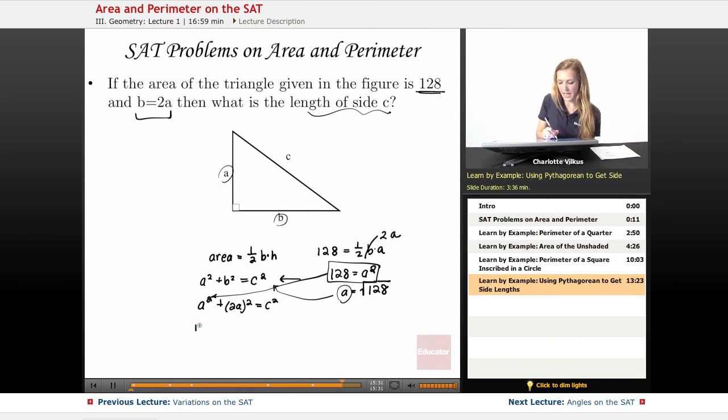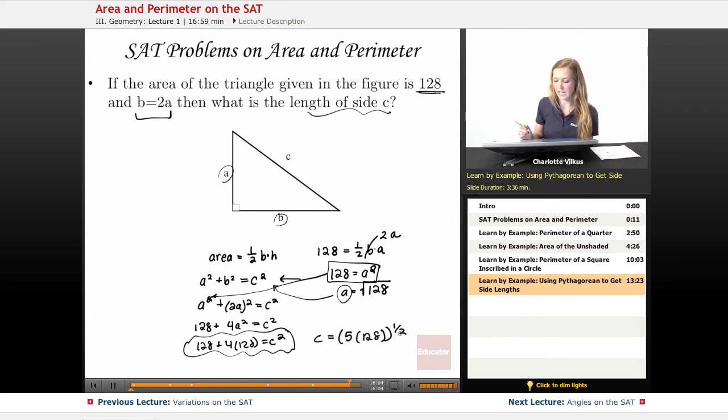So here when we plug in, we have 128 plus, this is really going to be 4A squared. So 128 plus 4 times 128, which equals C squared. And here we can just plug this in and do that C is going to be equal to the square root of 5 times 128. So this to the one half, or you can use your little square root sign on your calculator. And that would be the final answer.